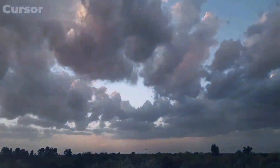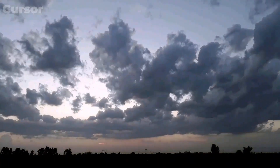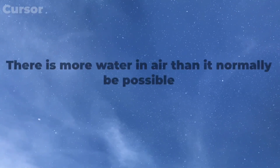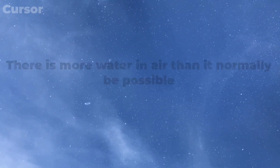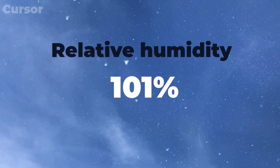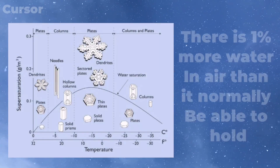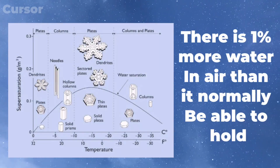For snowflakes to form, the cloud's air has to be supersaturated with moisture. That means there is more water in the air than would normally be possible. The relative humidity can reach 101% during supersaturation — meaning there is 1% more water in the air than it should be able to hold.